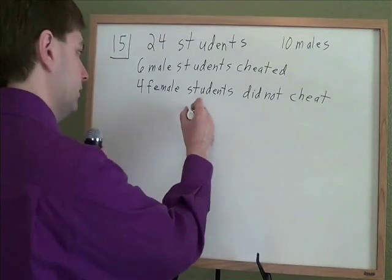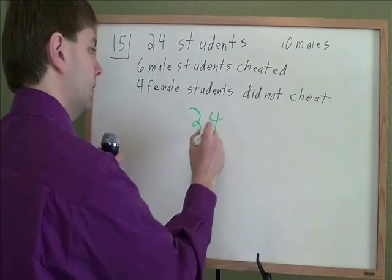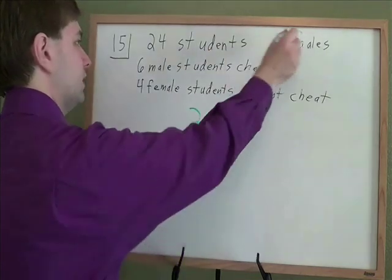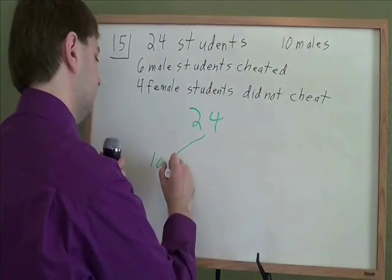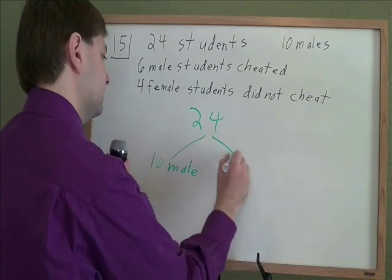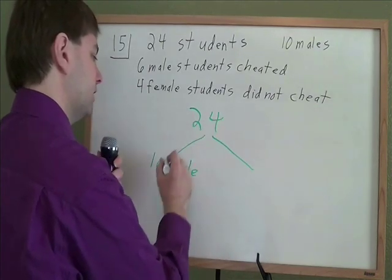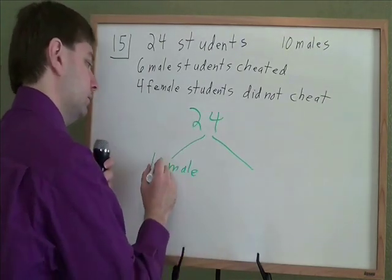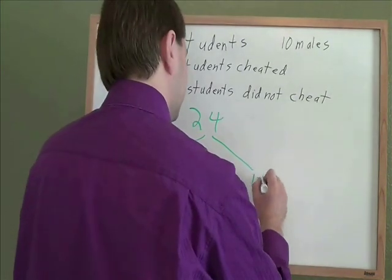So we start with 24 students in this problem. And of these students, they tell us that 10 are males. So how many females does that leave? There's 24 students, 10 are male. Well, 24 minus 10 is 14 female students.